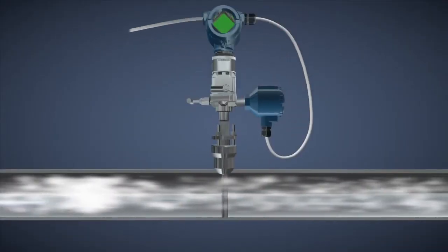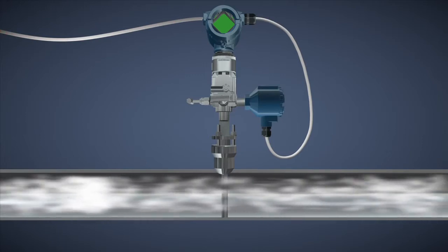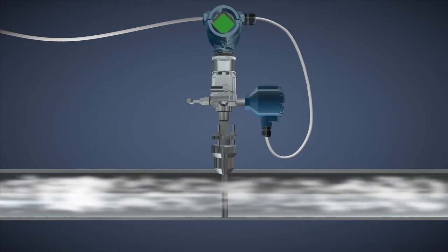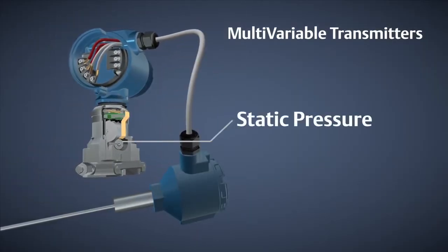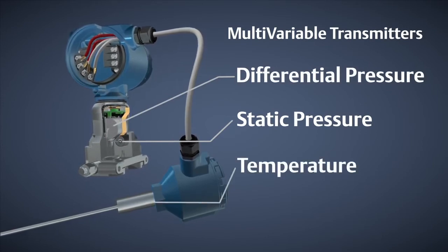The transmitter then relays the DP measurement to the control system. Today's advanced multivariable transmitters perform a compensated mass flow calculation in the transmitter of the integrated flow meter. The multivariable transmitter measures static pressure, differential pressure, and process temperature in one device.